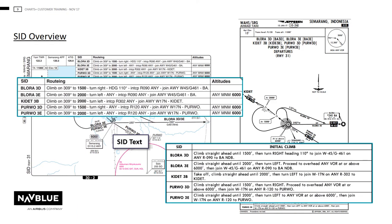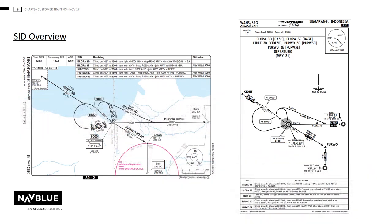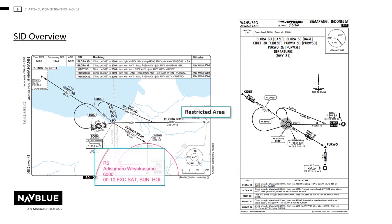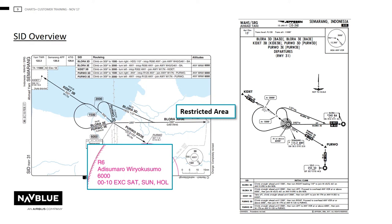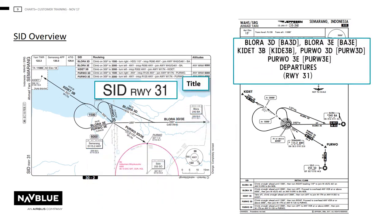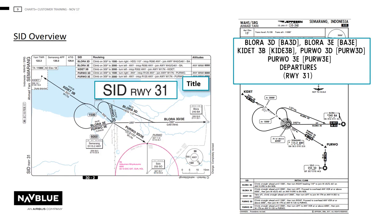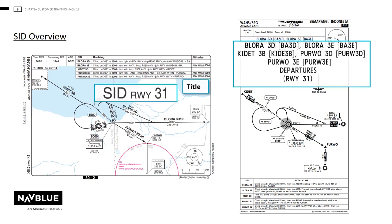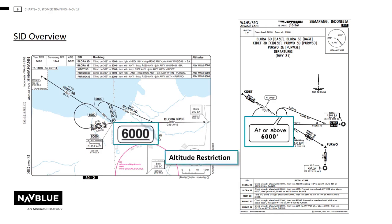NAVBLU will present altitudes within the SID text description for that routing. As previously mentioned, restricted, danger and prohibited areas will only be shown when they penetrate the procedure. If all procedures from a runway are shown, then NAVBLU will call the chart 'SID runway 31' instead of highlighting every procedure name. For an at or above altitude, NAVBLU will show the altitude with a line underneath it.